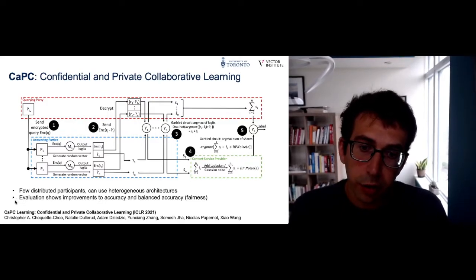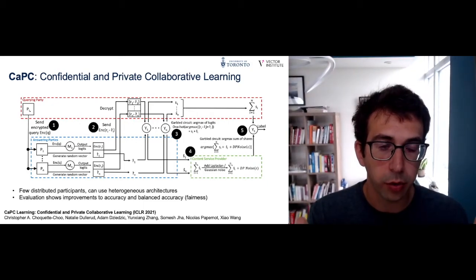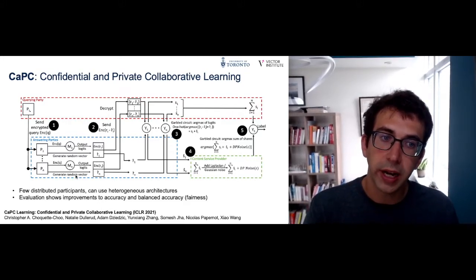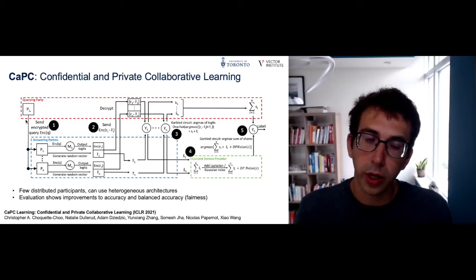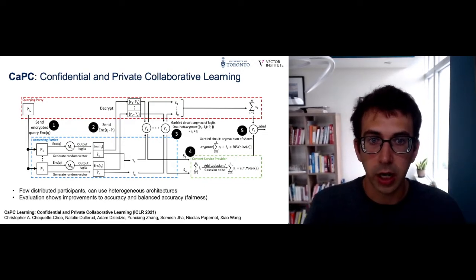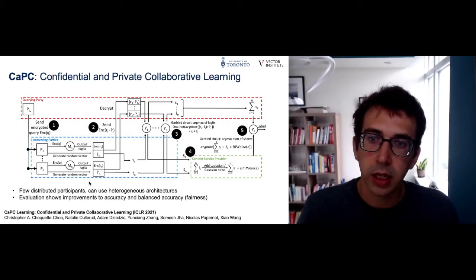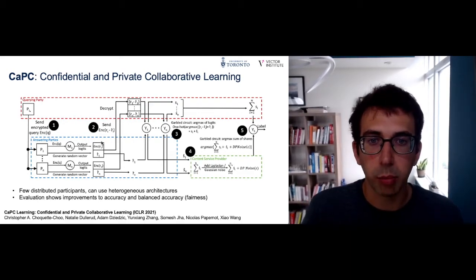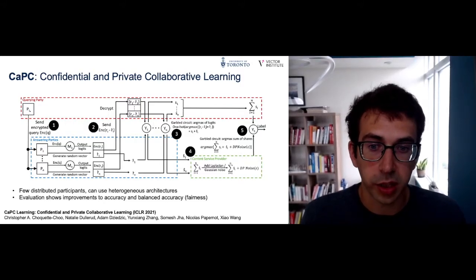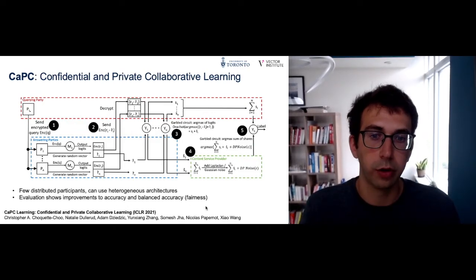CAPSI enables distributed learning where parties have heterogeneous architectures — unlike federated learning, they don't need to agree on a common model but can retain their local models and exchange labels. It provides differential privacy guarantees that federated learning does not. It also improves accuracy and fairness because different parties may have data that the querying party lacks — so when the querying party receives an input from an underrepresented subpopulation, it can leverage the answering parties' predictions to improve local model fairness.